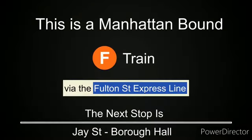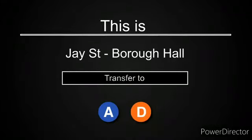This is a Manhattan-bound F-train via the Fulton Street Express line. The next stop is Jay Street Borough Hall. This is Jay Street Borough Hall. Transfer is available to the A and C trains.